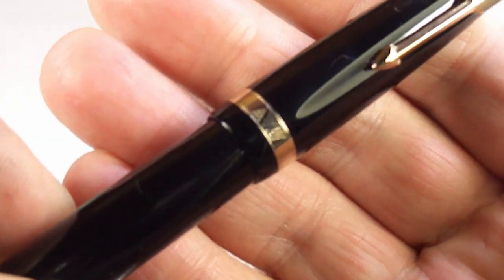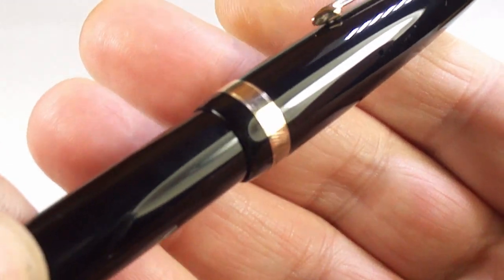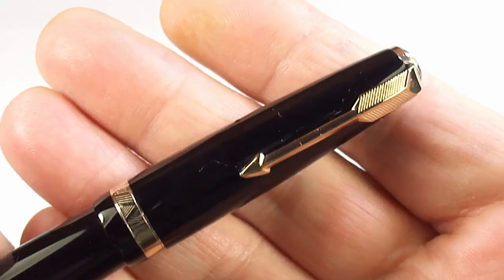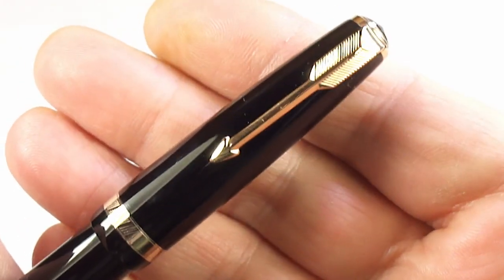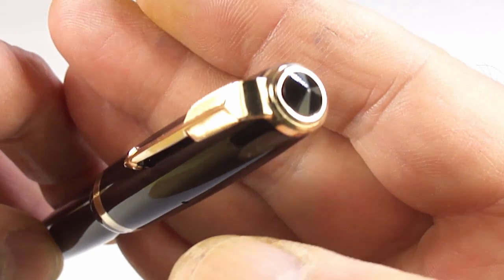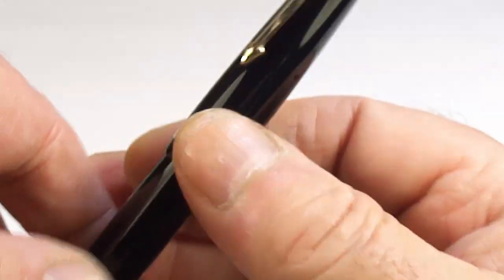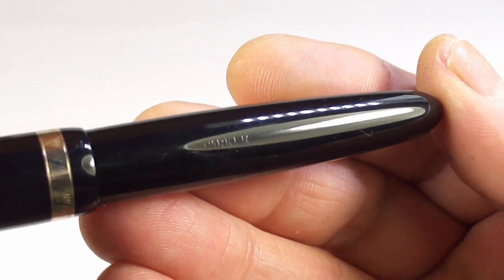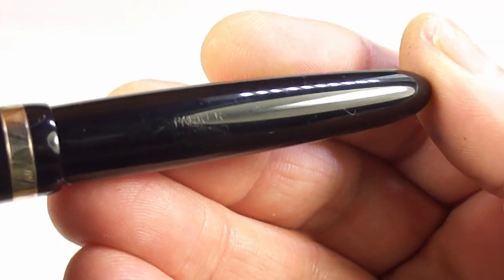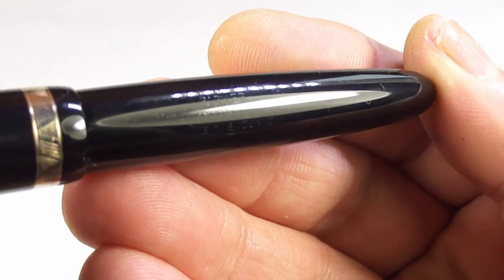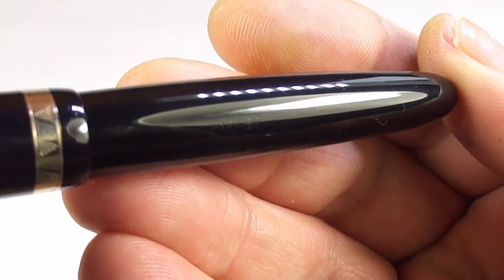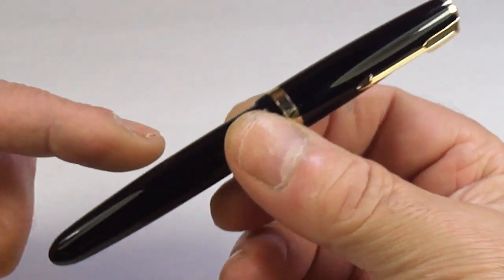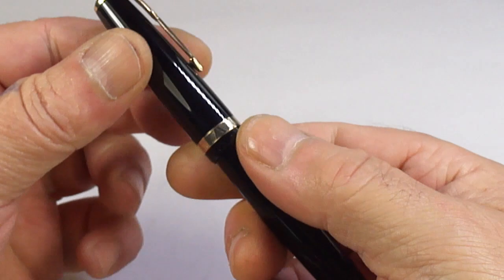To the cap, we've got this quite a wide cap band there. As you can see, the very recognizable Parker clip there, the arrow clip, a little black stud to the very top of the cap there. We've got a barrel imprint, a little bit on the worn side. I don't know how clear it will be, but it reads Parker Duofold made in England, a gorgeous, another quality made fountain pen.